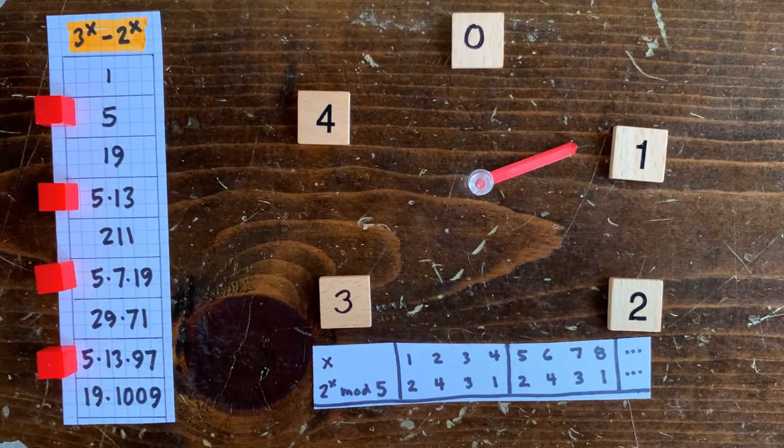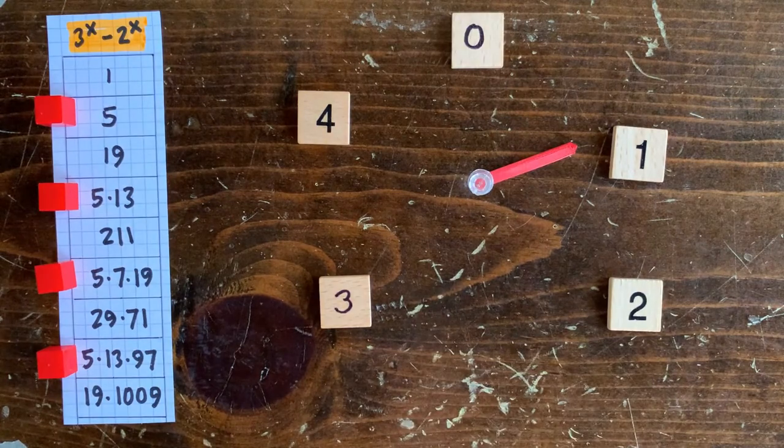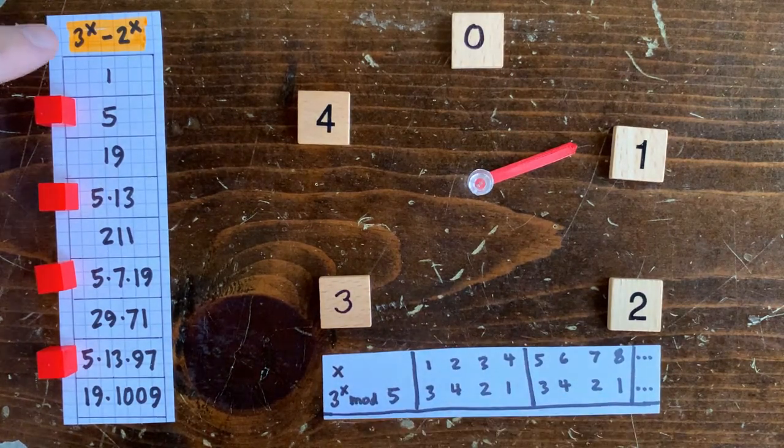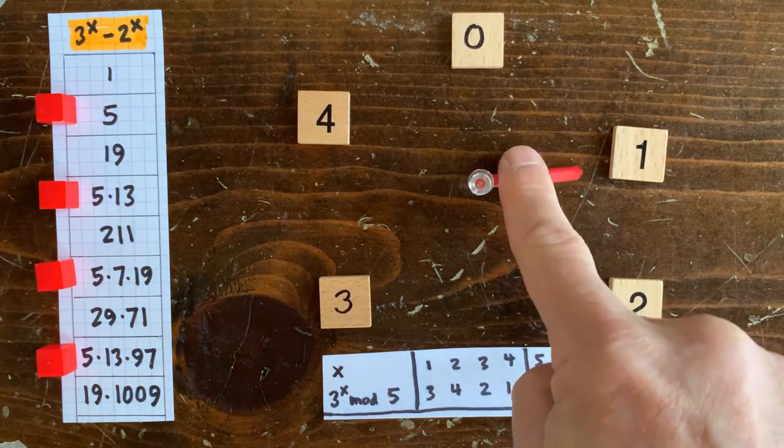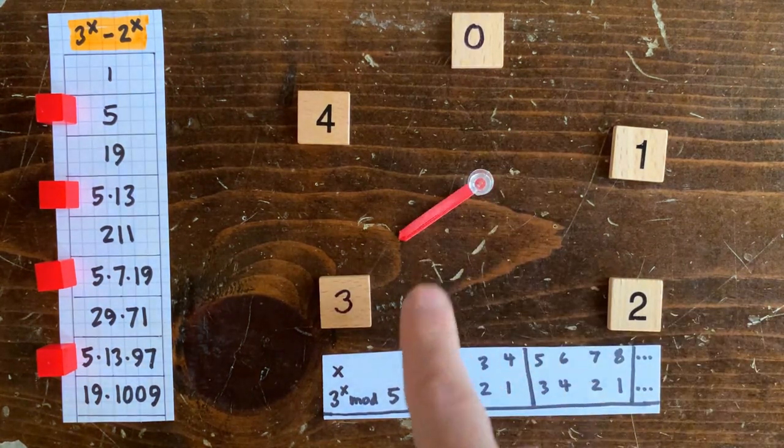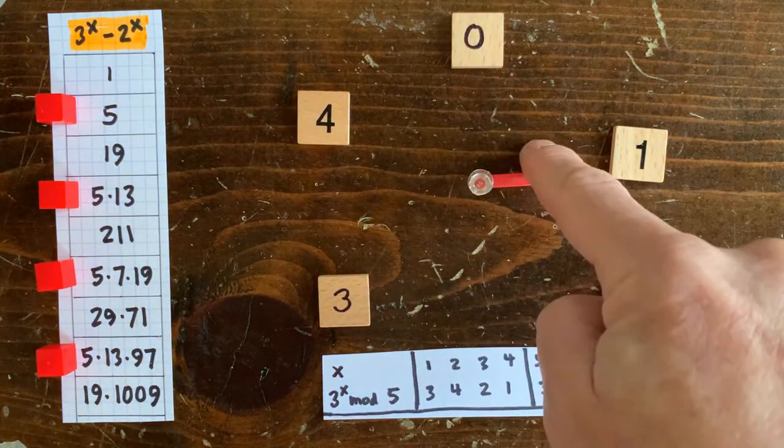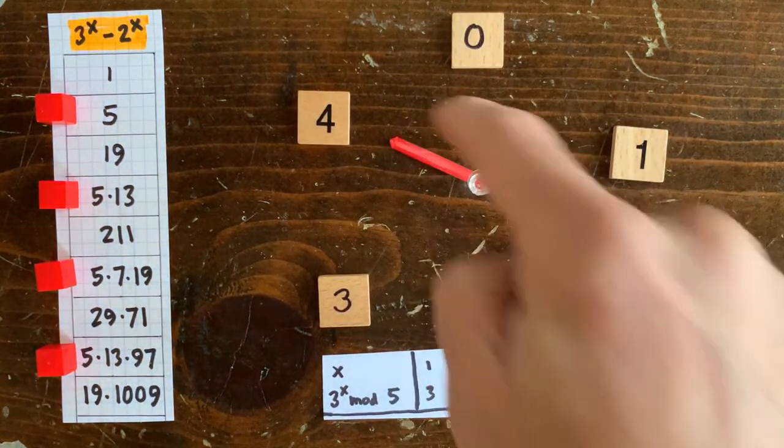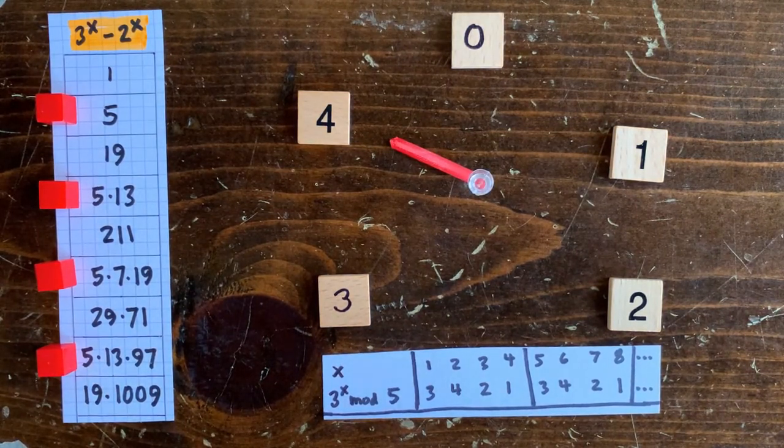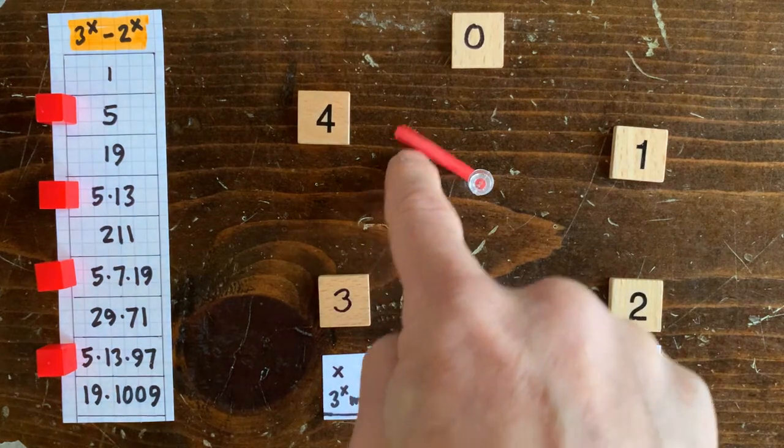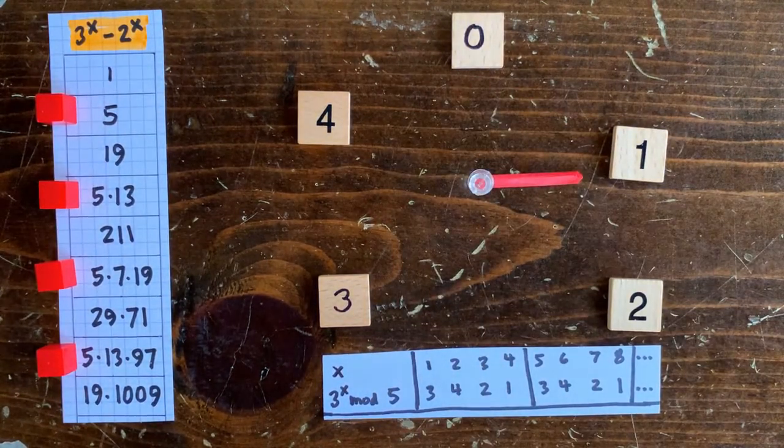Now imagine another planet where they use a 3 to the x clock, so the clock speeds up even more exponentially. After 1 time unit it's 3 o'clock, and then after 2 time units it's 9 hours, but that's really 4 o'clock. And then 27, 81, so after 3 to the 4th is 81, that's 1 o'clock. So here the pattern is 3 o'clock, 4 o'clock, 2 o'clock, 1 o'clock, and then it repeats.